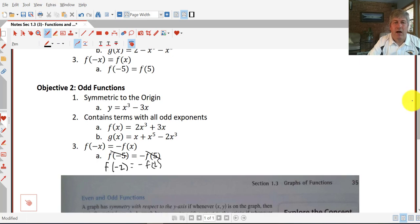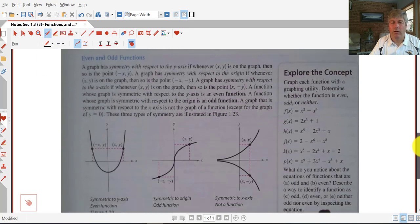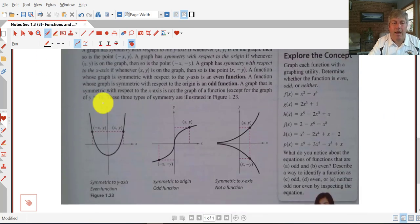With an odd function, odd functions are symmetric to the origin, like y equals x cubed minus three x is going to be symmetric to the origin. And you can see below here the symmetry that we have. Here's our symmetric to the y-axis. Here's our parabola.